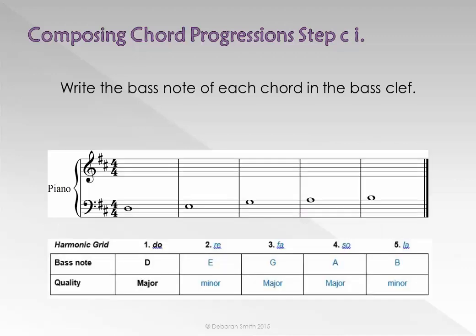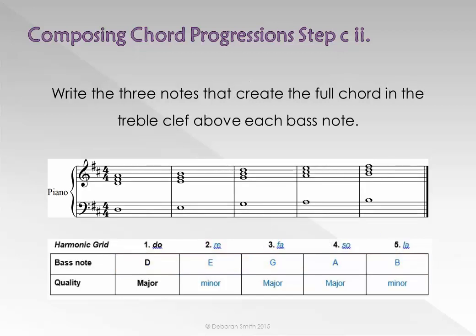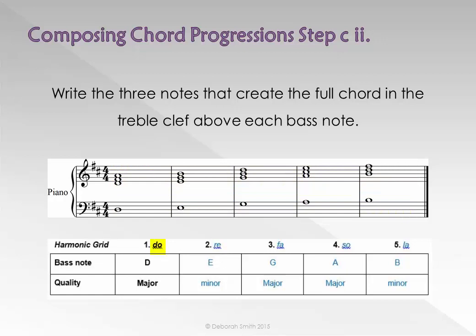The next step is to write the chords from your chord chart onto the staff. Firstly, write the bass note of each chord in the bass clef. Then write the three notes that create the full chord in the treble clef above each bass note. For example, I have written the D major triad in the treble clef as D, F sharp and A.